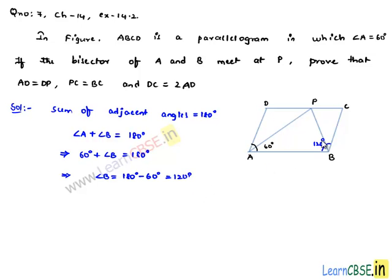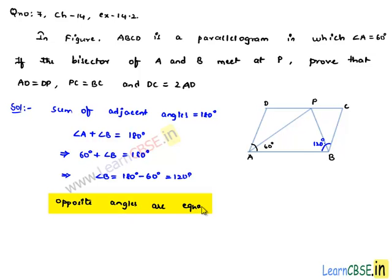So here we got the value of angle B as 120 degrees. We know that in a parallelogram, opposite angles are equal. So we can say angle D is equal to angle B, which is 120 degrees, and angle C is equal to angle A, which is 60 degrees.